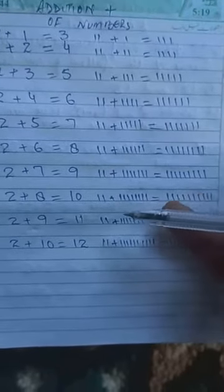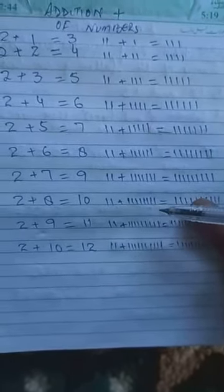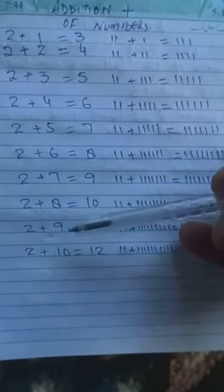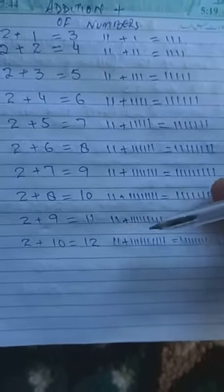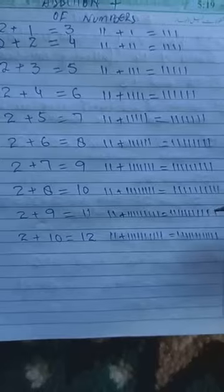Two plus nine equal to eleven. Two lines plus nine lines, them together make eleven lines.